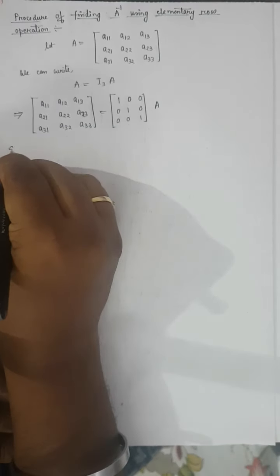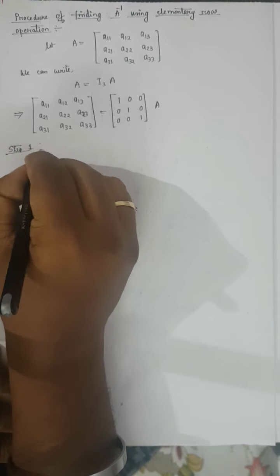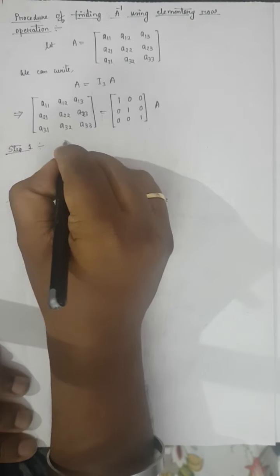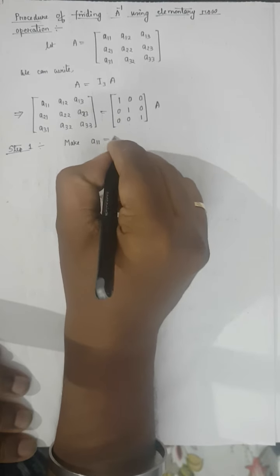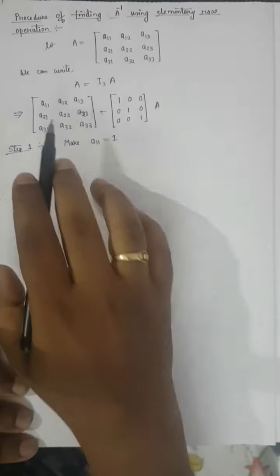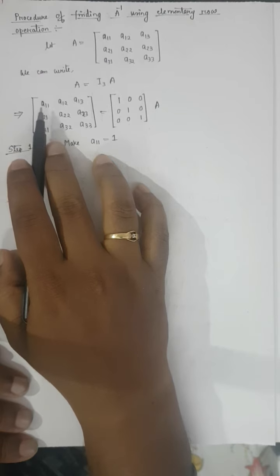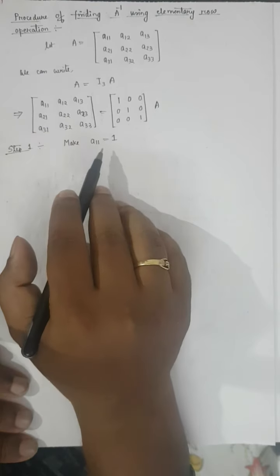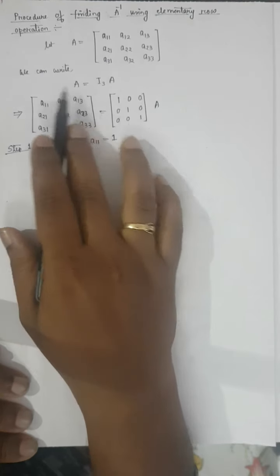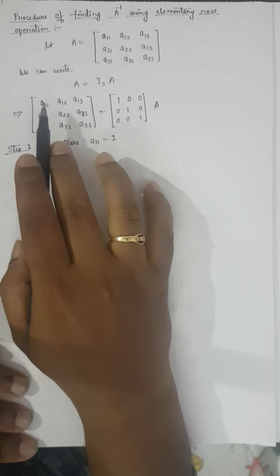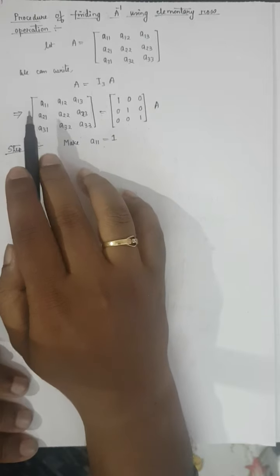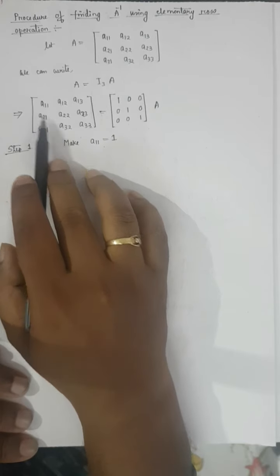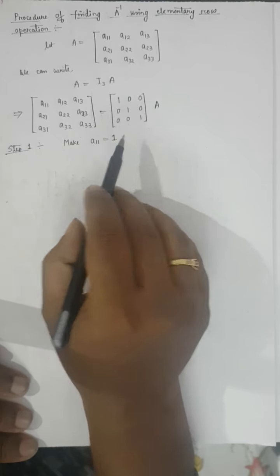Step 1: Make A₁₁ equal to 1 — that is, the first element of the first row and first column should equal 1. To make it the identity matrix I₃ with structure [1,0,0; 0,1,0; 0,0,1], we need A₁₁ equal to 1.